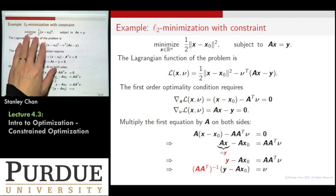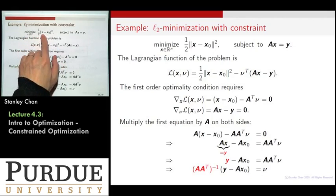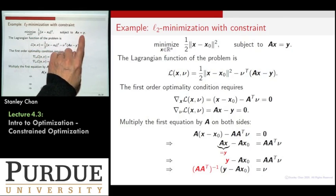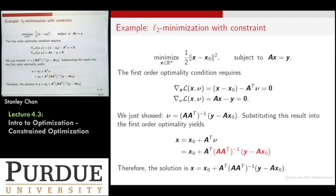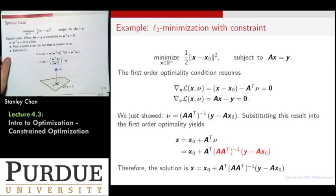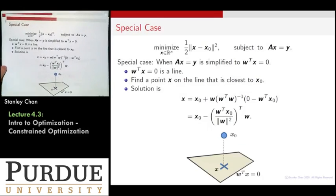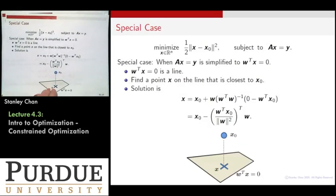This problem says that I want to minimize the distance between a point x and another fixed point x0. I want to minimize the distance between these two. Subject to a constraint that x has to live on certain space. A x equals to y. So if you go down your slide, go to slide number 25, you will see that, and here's one example.